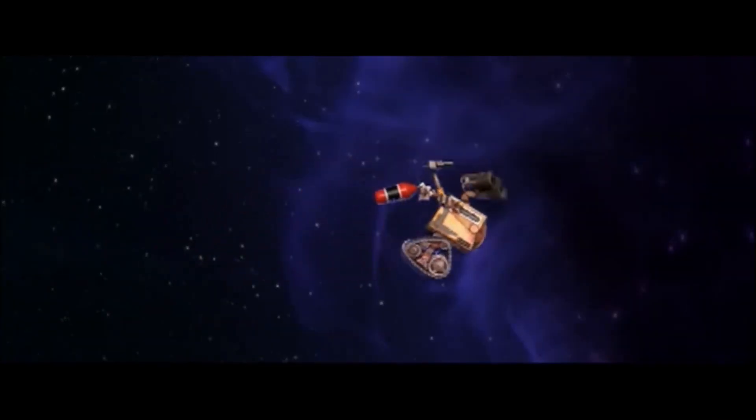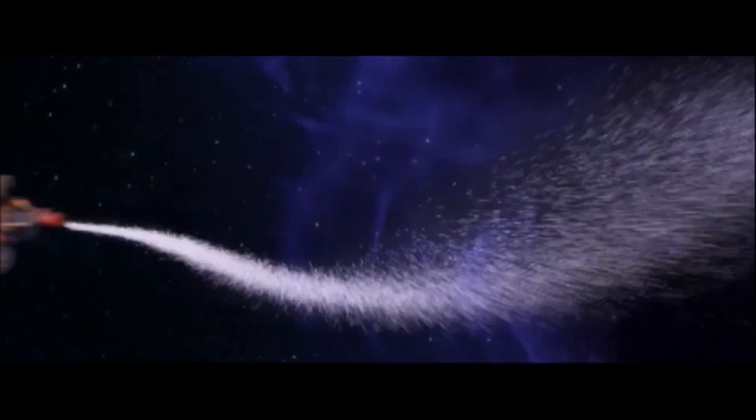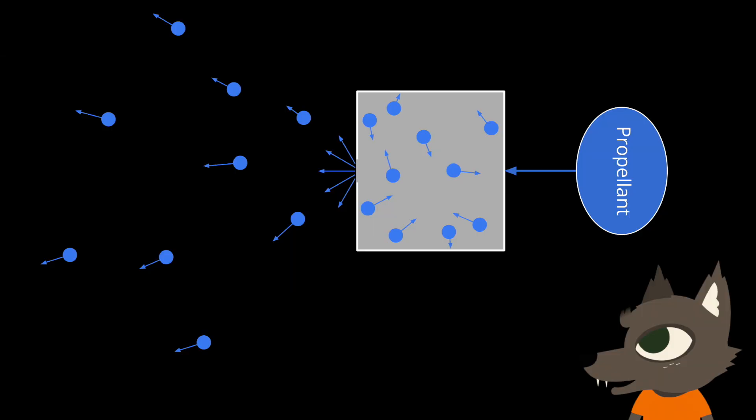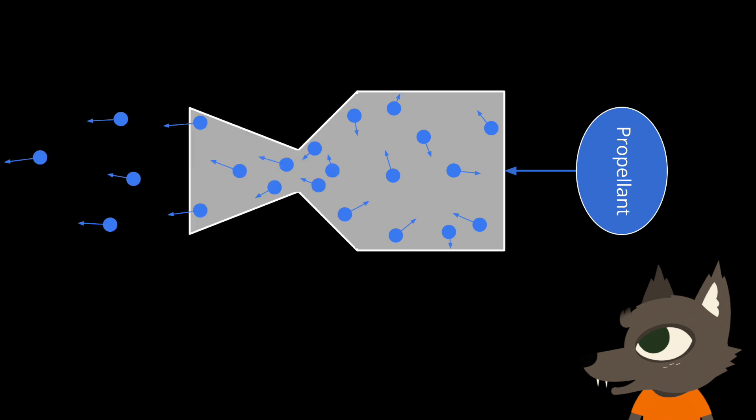Okay, so we need a way to expel propellant behind us at high velocity, but how can we actually make something to do it? One of the easiest ways is to just open up a bottle of compressed gas and point it behind you. The gas molecules inside the bottle start off bouncing around randomly, so they spray off every which way. We can fix this by adding a nozzle to help direct the gas molecules to all go in the same direction when they leave the thruster.